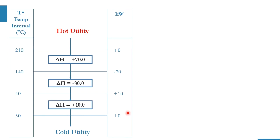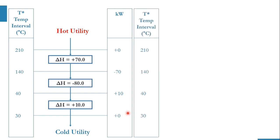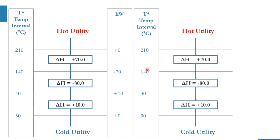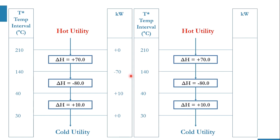We draw the same column again with cold utility at the bottom. There is a negative value at 140°C, making this the infeasible cascade. The most negative value is minus 70, so we take 70 as the hot utility input at the top. The feasible cascade then becomes: 70, 0, 80, 70.